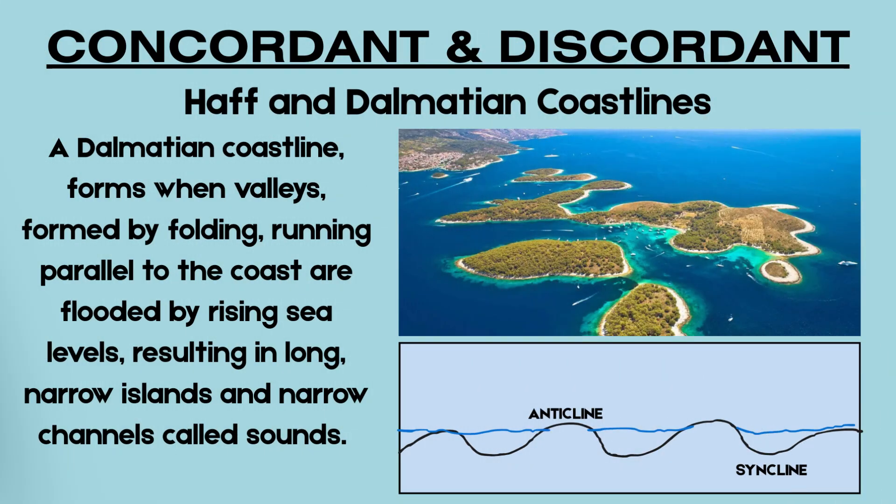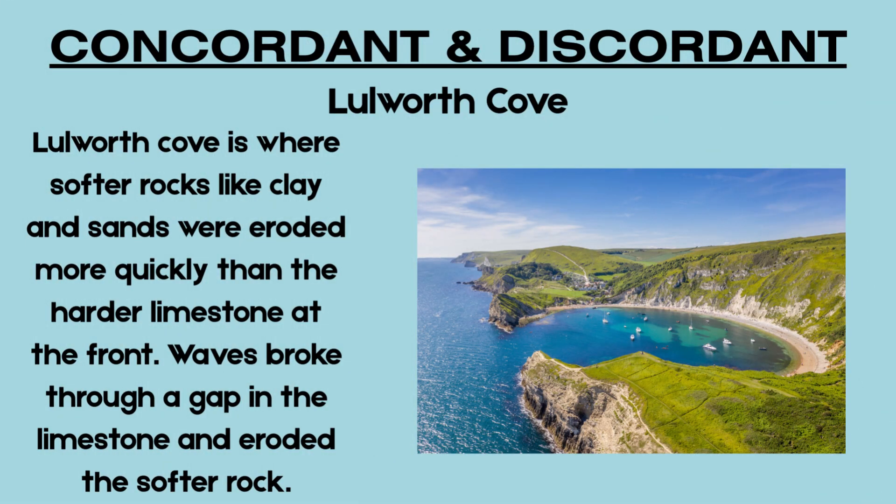A Dalmatian coastline forms when valleys, formed by folding, running parallel to the coast are flooded by rising sea levels, resulting in long, narrow islands and narrow channels called sounds. A final example, one of the most famous coastal locations in the UK, is Lulworth Cove. The cove formed as a result of differential erosion where softer rocks like clay and sands were eroded more quickly than the harder limestone at the front. Waves broke through a gap in the limestone and eroded the softer rock.